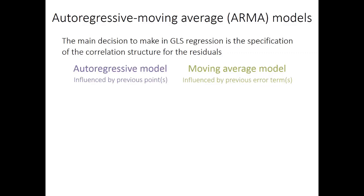Points in an autoregressive model are influenced by the position of the previous point or points. In a moving average model, they're influenced by the previous error term or terms. When influenced only by the one immediately preceding, it's a first order model. When influenced by the preceding two values, it's a second order model, and so forth. Normally it'll be lower order for most data.